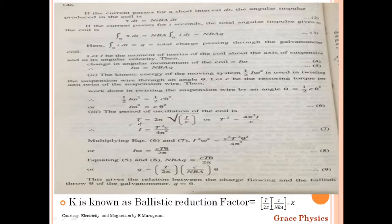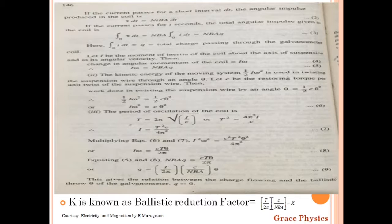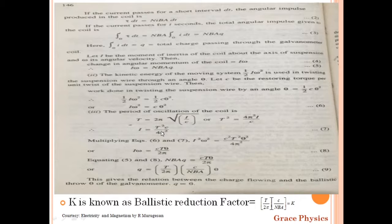The period of oscillation T is equal to 2π times the square root of I/C. Squaring gives T² = 4π²·I/C, so I = T²·C / (4π²).